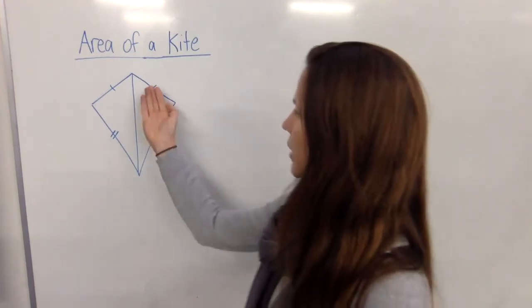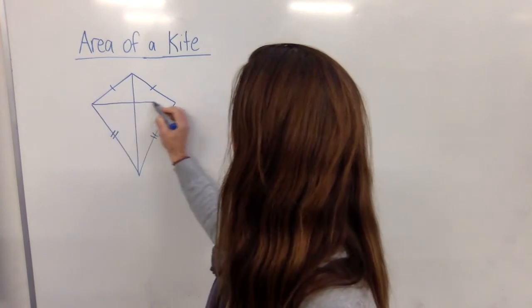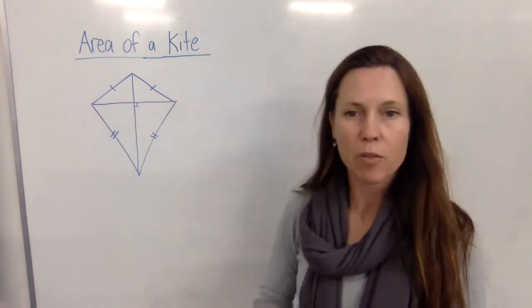So if we put one diagonal in, it actually divides it into two triangles that are exactly the same. Now the other diagonal comes across and meets the first diagonal at right angles.